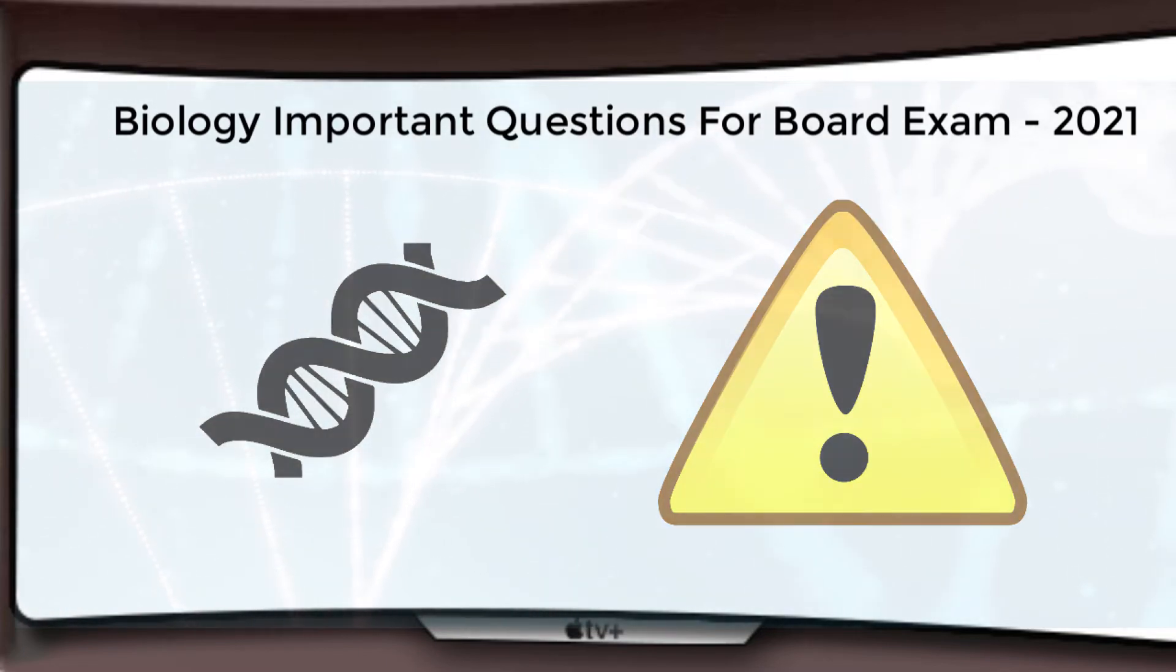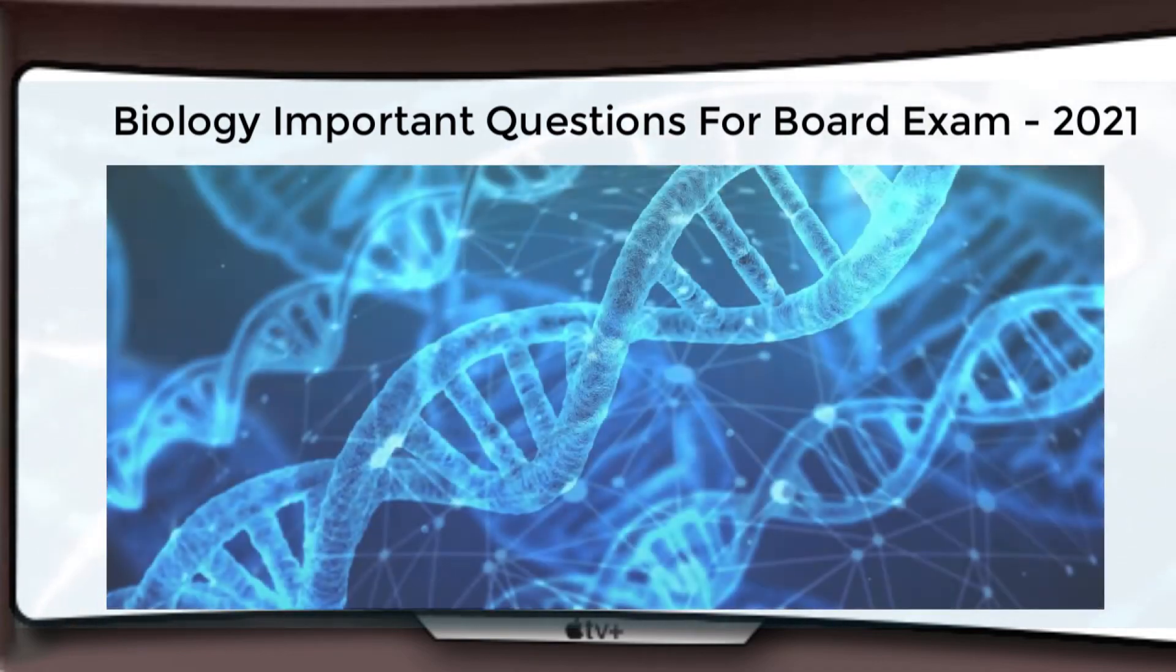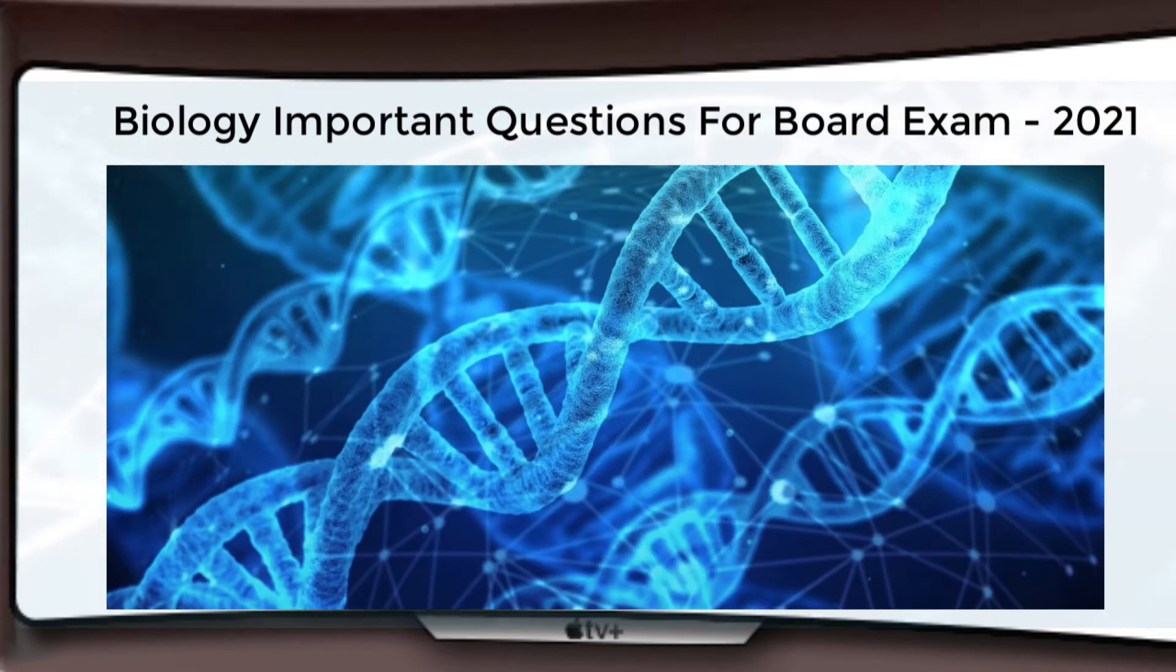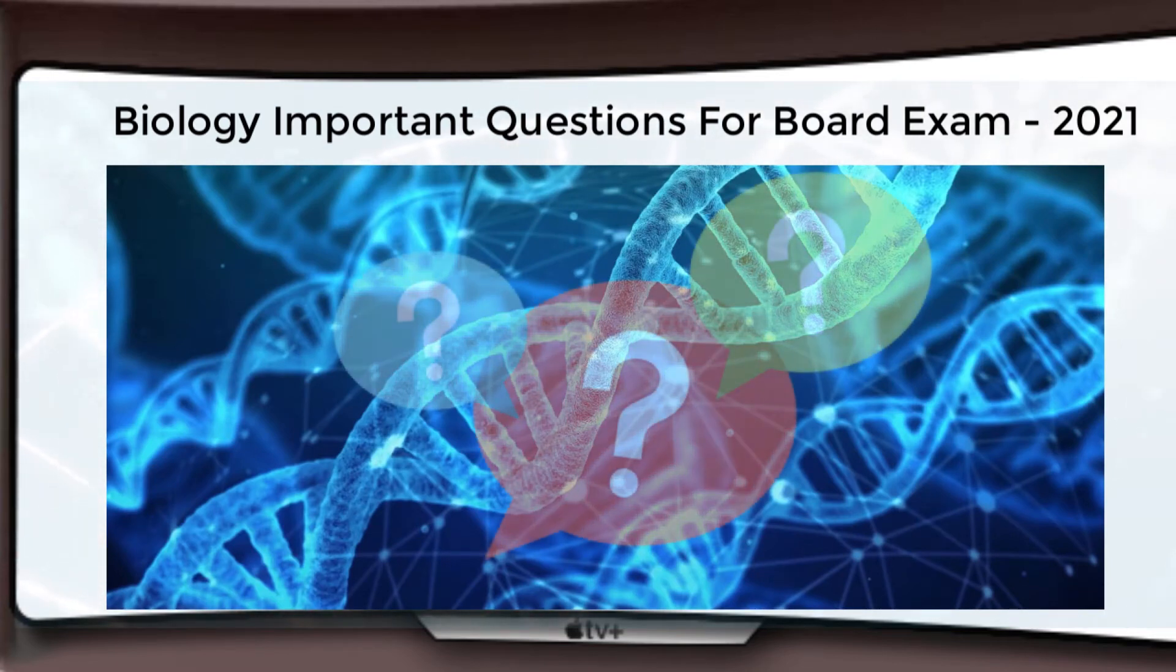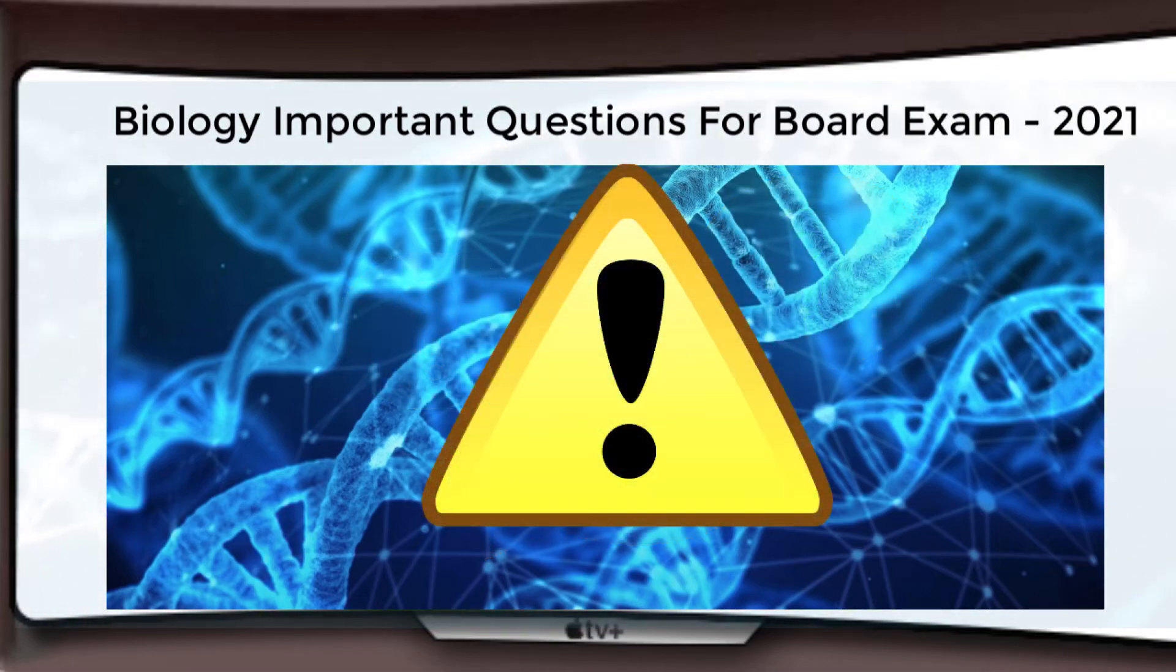The next chapter is Molecular Basis of Inheritance. In this chapter, the questions are just like: why DNA chose semi-conservative type of replication, what do you mean by replication, Griffith experiment, what do you mean by transcription, what do you mean by translation. You will get these types of questions. Operon—a very very important question—what do you mean by operon, why operon is important, there are two types of operon, explain them.